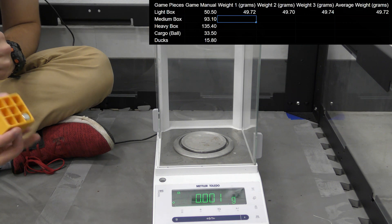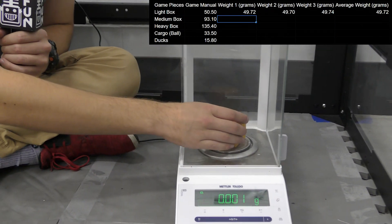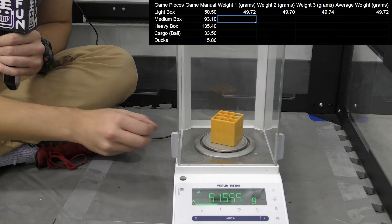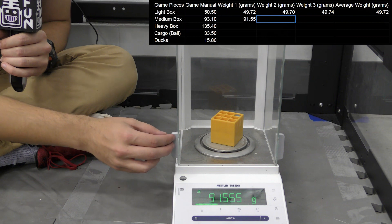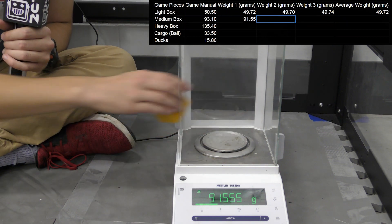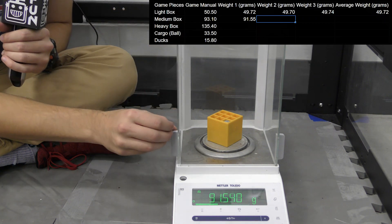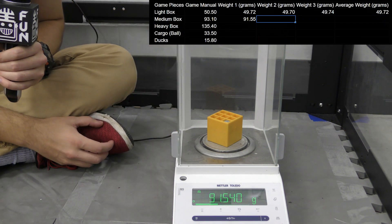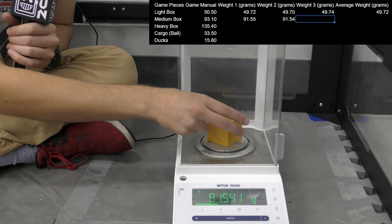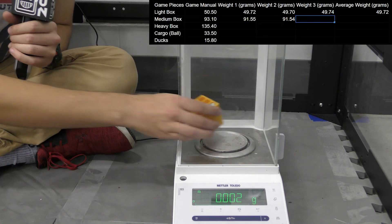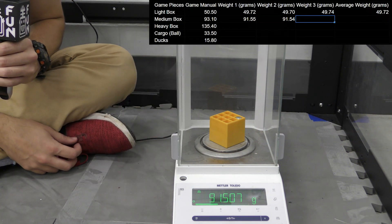Next we'll do the medium weight cubes. So these have one weight on each side. So we got 91.55 grams. And then we got 91.54 grams. And then for the last one of that weight we have 91.50.